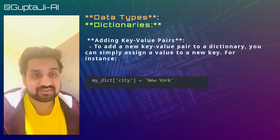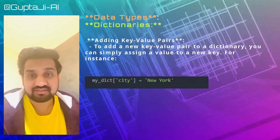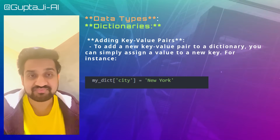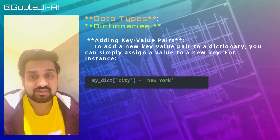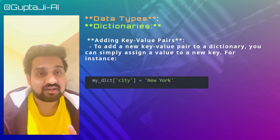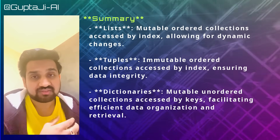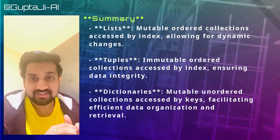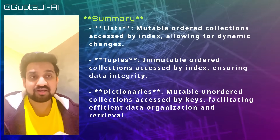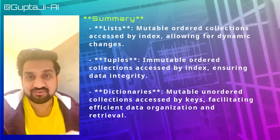To add a new key-value pair to a dictionary, you simply assign a value to a new key. For example, my_dict['city'] = 'New York' adds city as a new key. In summary: lists are accessed by index and allow dynamic changes; tuples are immutable ordered collections ensuring data integrity; dictionaries are mutable unordered collections accessed by keys, facilitating efficient data organization and retrieval.